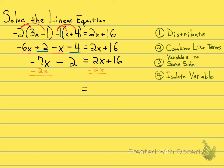Drop down your equal sign. On the left, we see negative 7x minus 2x. That is a negative 9x minus 2. And on the right-hand side, 2x minus 2x turns into a 0. So I'm left with just a 16.